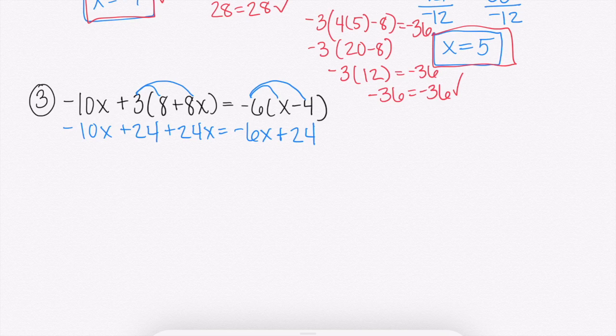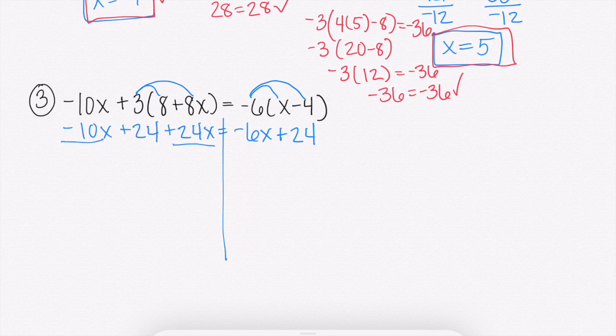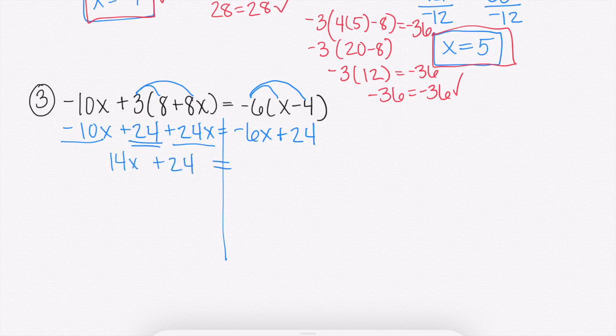From here, I'm going to combine any like terms that are on the same side if you can. From here, you might have to just go straight into solving. But I notice on my left side of the equation, I have a negative 10x and a 24x. Those are like terms. I can combine those to get 14x. So over here, I'm going to combine those to get 14x. And then I still have that 24. And then over on my right-hand side, those are not like terms, so I can't combine anything there.